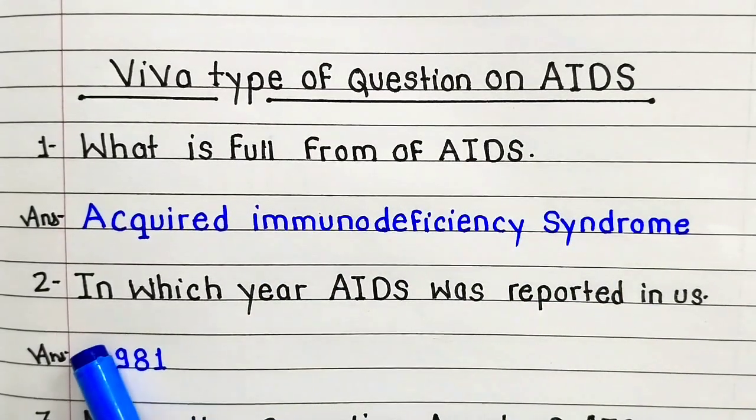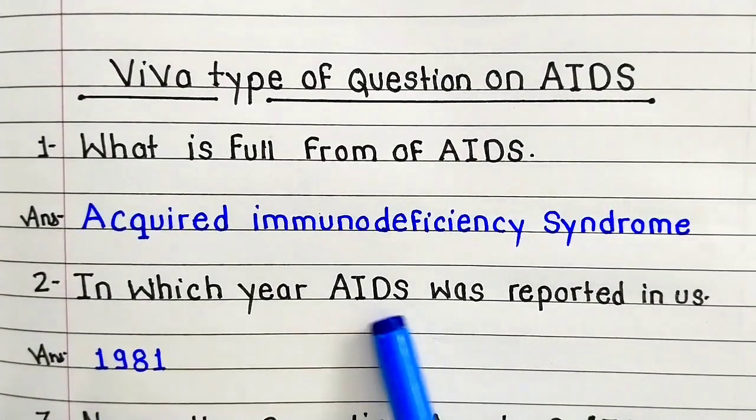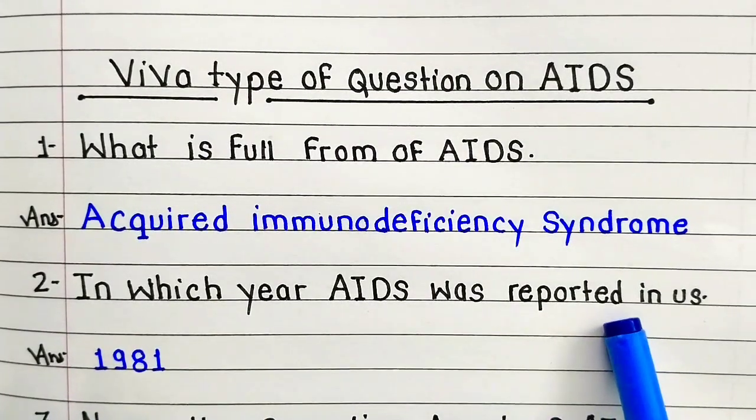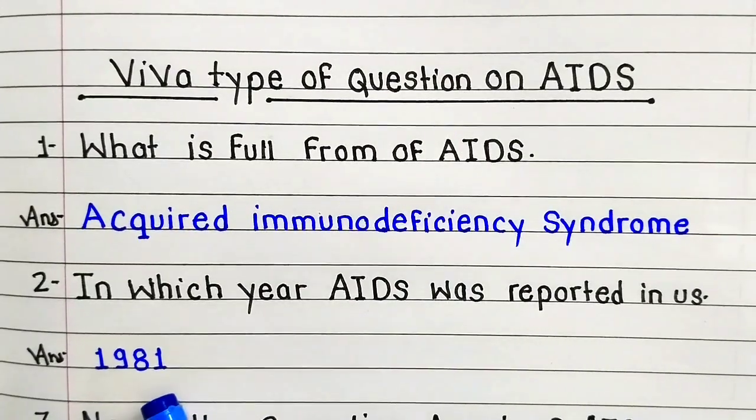Second question: in which year was AIDS reported in the US? Answer: 1981.